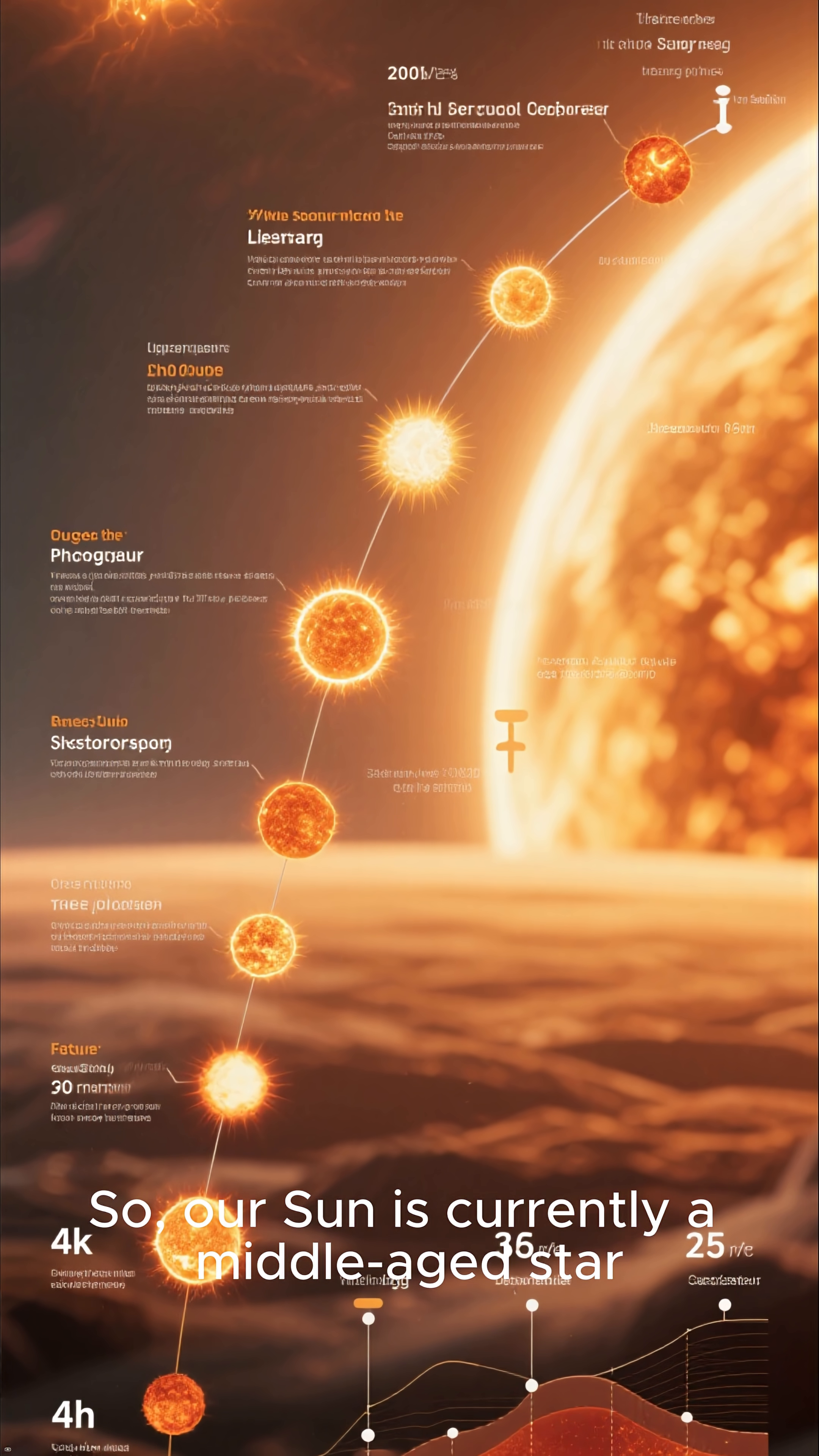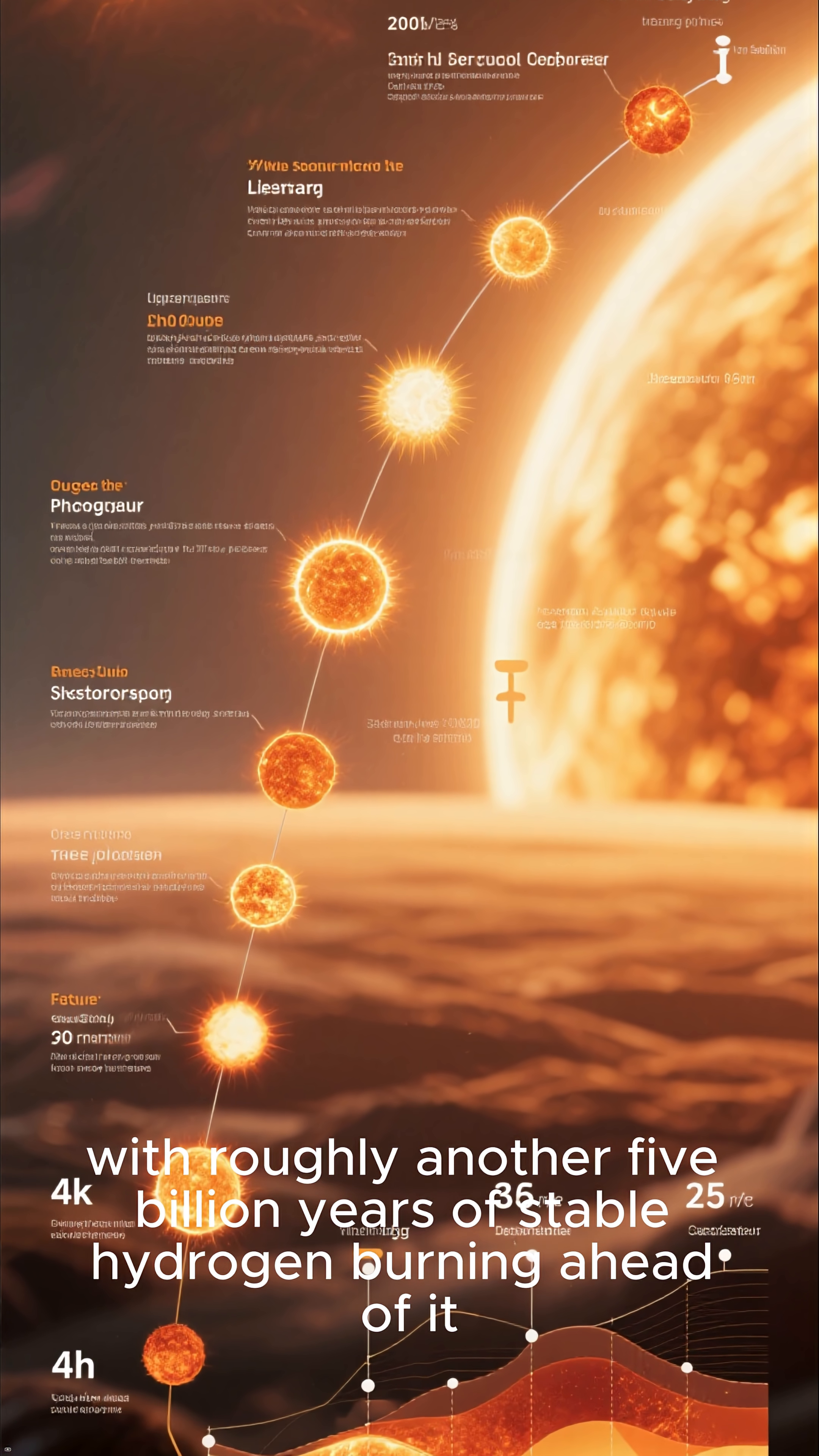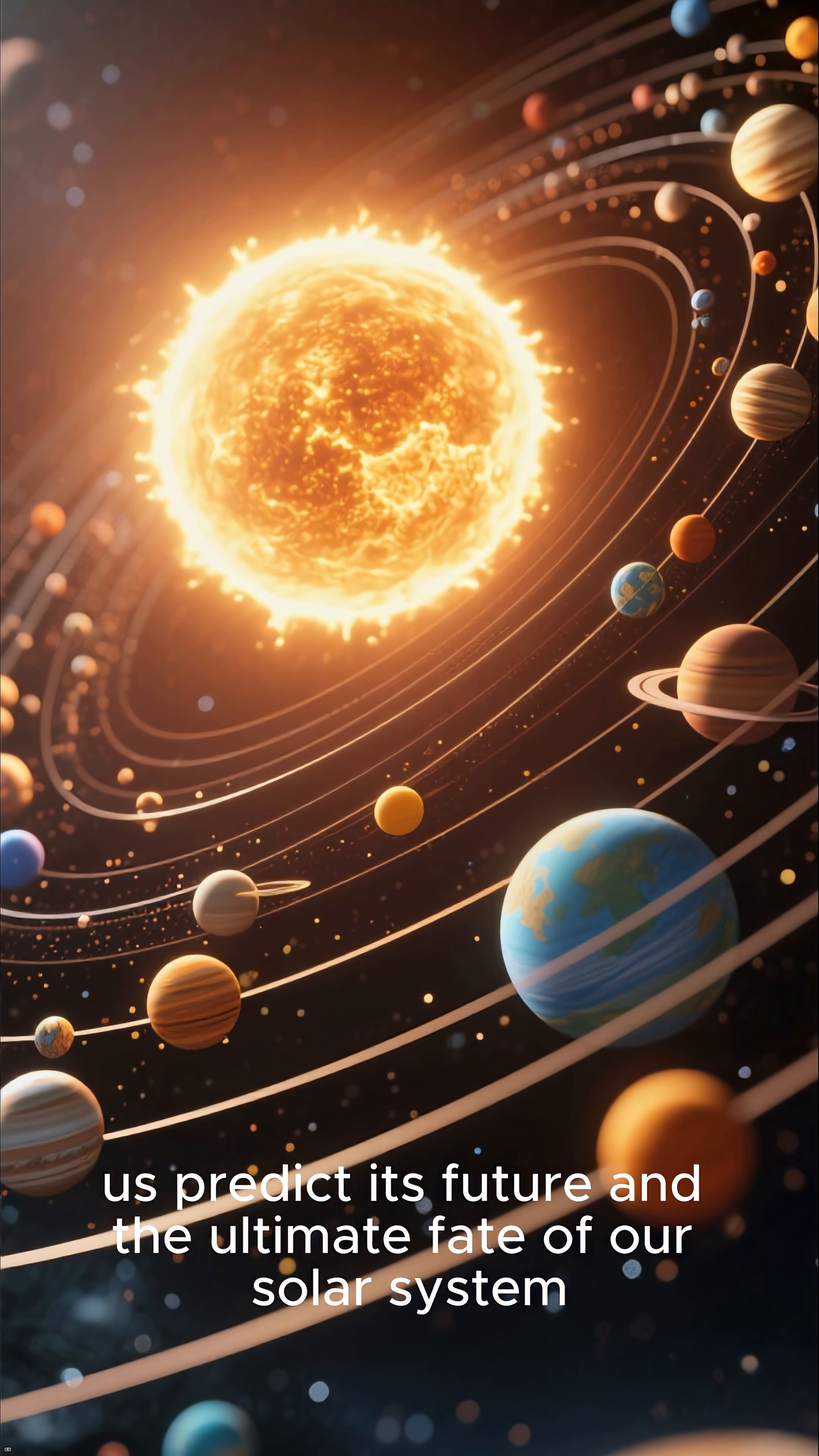So, our Sun is currently a middle-aged star, about 4.57 billion years old, with roughly another 5 billion years of stable hydrogen burning ahead of it. Understanding the Sun's age helps us predict its future and the ultimate fate of our solar system.